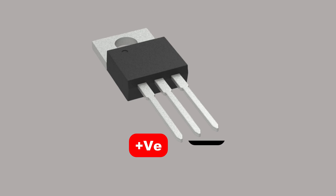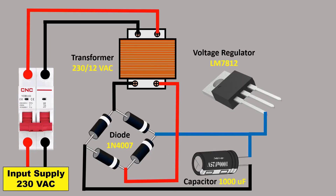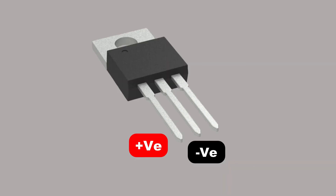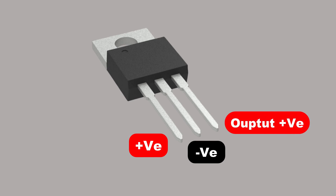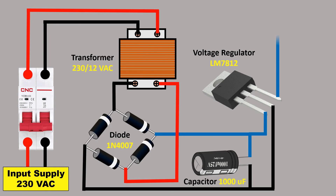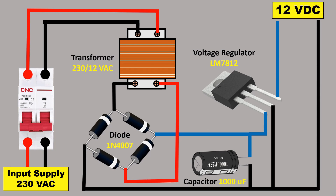The second pin of the voltage regulator is for ground, so take the negative power supply and connect it to the ground pin. From the third pin of the voltage regulator you will get positive output power supply, so connect one wire to this pin. Also connect a wire from the negative supply for the negative output. Finally, connect a 1 µF capacitor across the output power supply of the voltage regulator. After all these connections, your AC power supply will be converted into DC power supply.